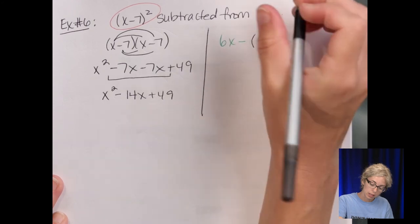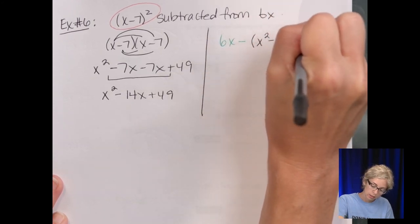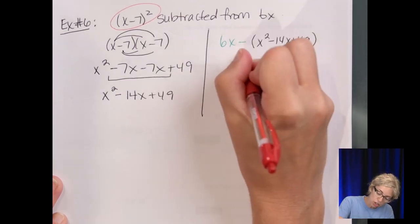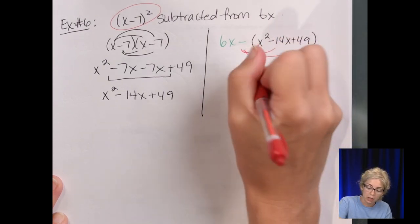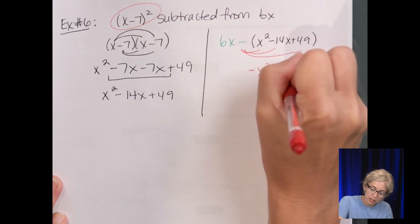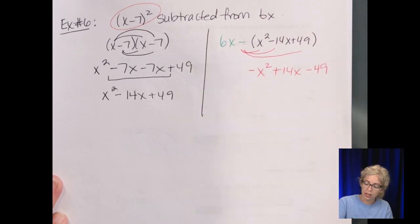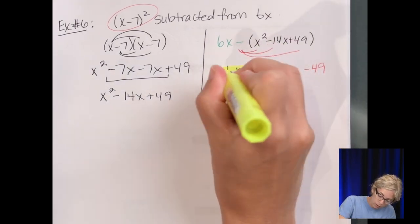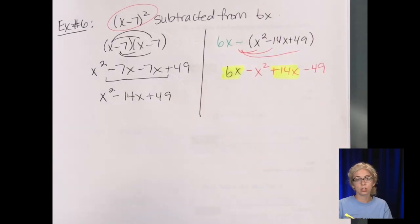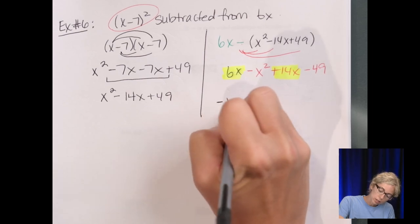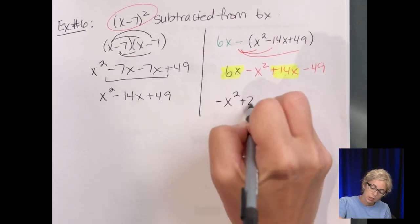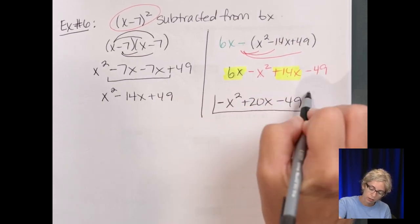Now we subtract that trinomial from 6x. Since it's subtracted, it changes the sign of the whole trinomial: negative x squared, positive 14x, and negative 49. We swap all the signs and combine with the 6x. The only like terms are the x terms: 6x and 14x. Putting it in standard form with the leading term first: negative x squared plus 20x minus 49.